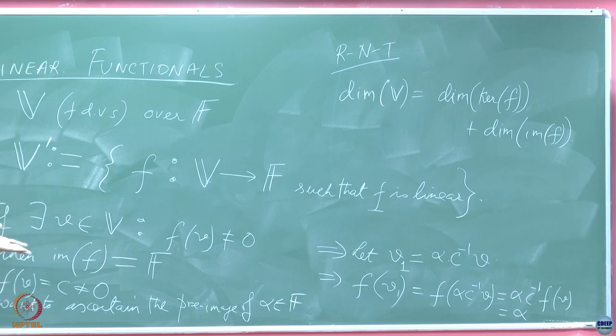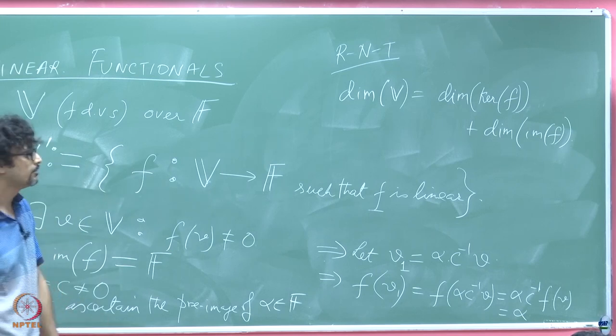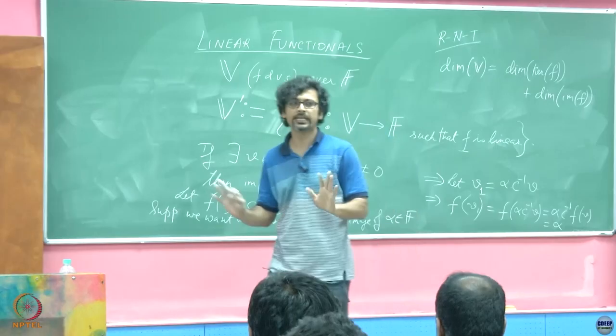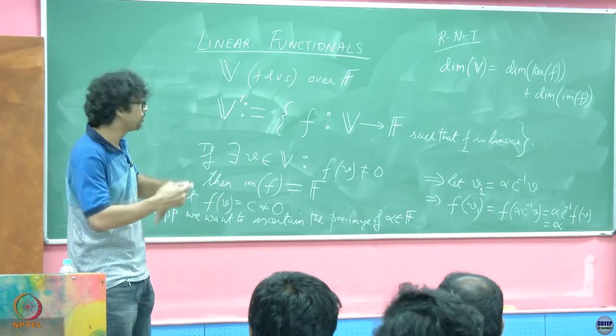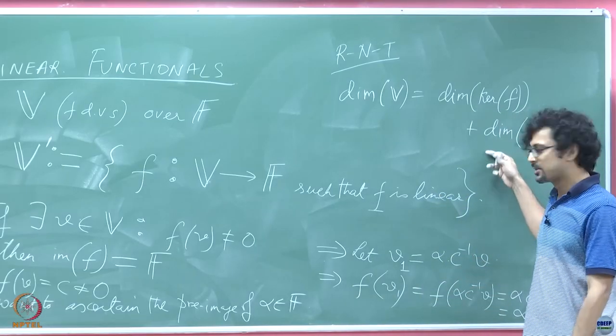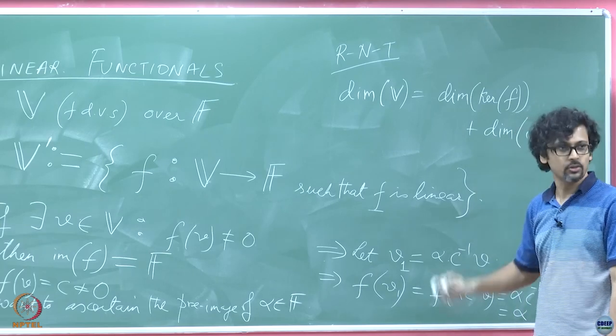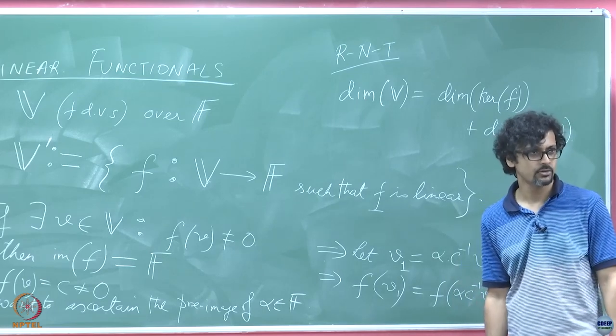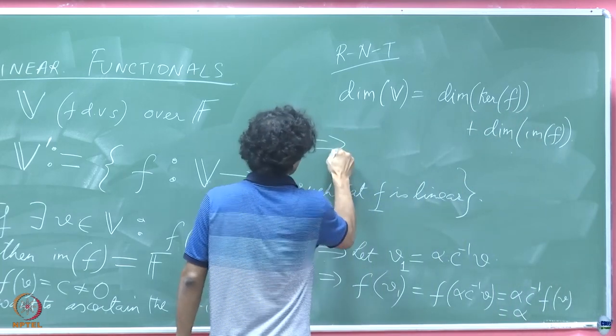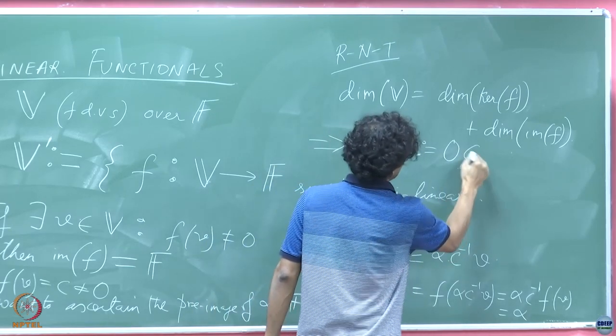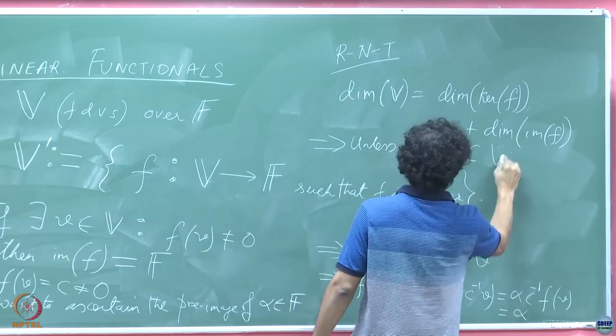So if I found one non-zero element in the field which has a pre-image, then every non-zero element in the field will have a pre-image. It is but natural, because of the linearity of F, the linearity of F guarantees that. So suppose we want to ascertain the pre-image of alpha in the field, then what do we need to do?